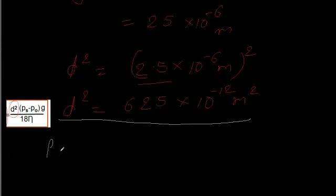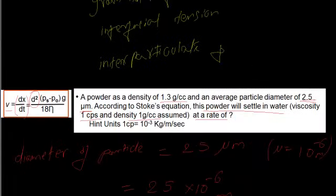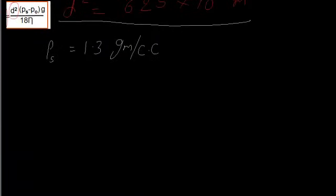The next thing we need is the density of the particle. The density of the particle is 1.3 grams per centimeter cubed.